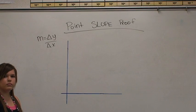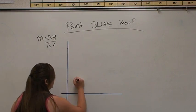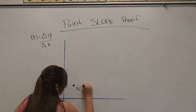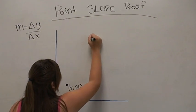To start the proof, we need two general points: x1, y1 for our first point, and x2, y2 for our second point.